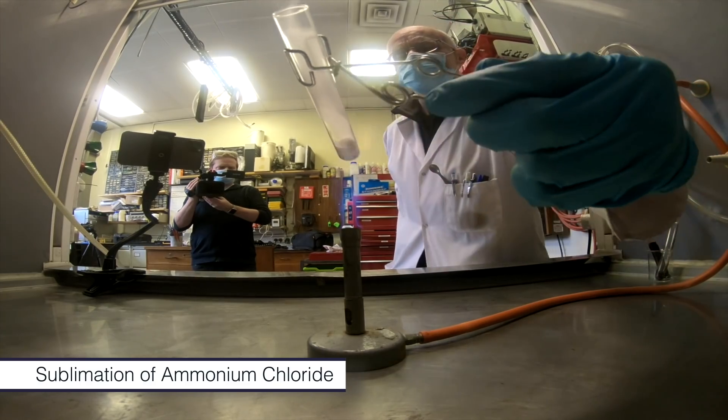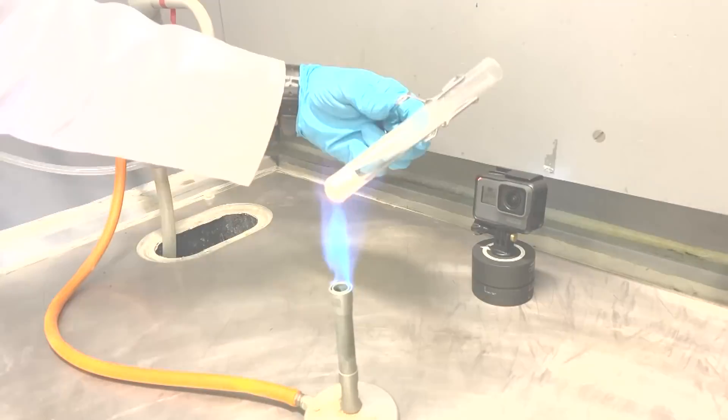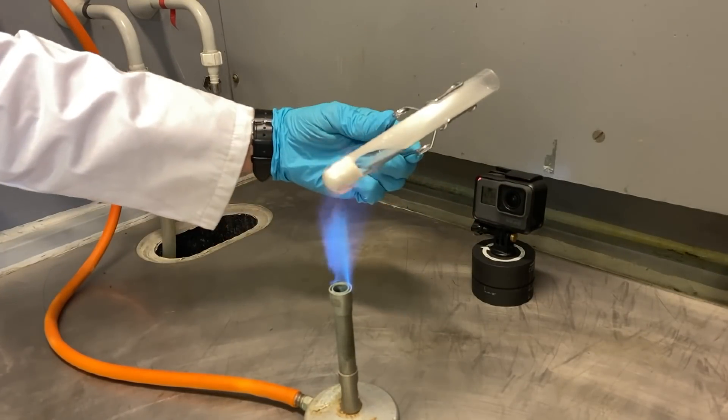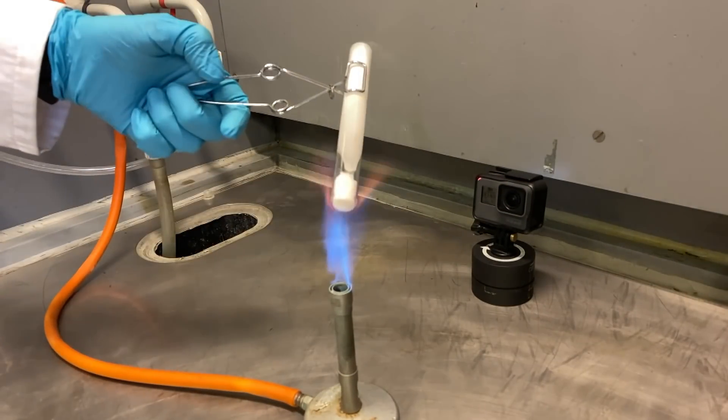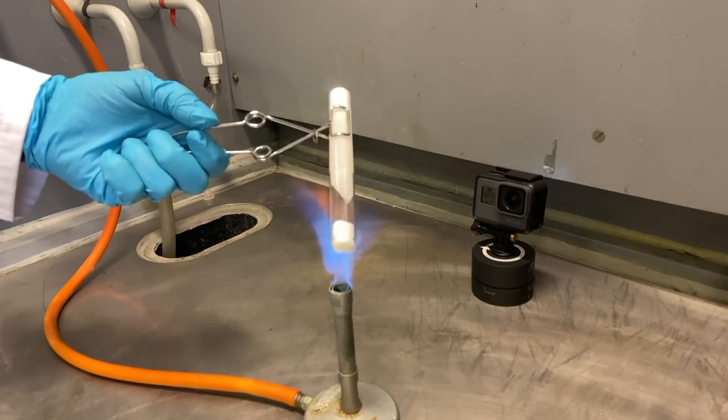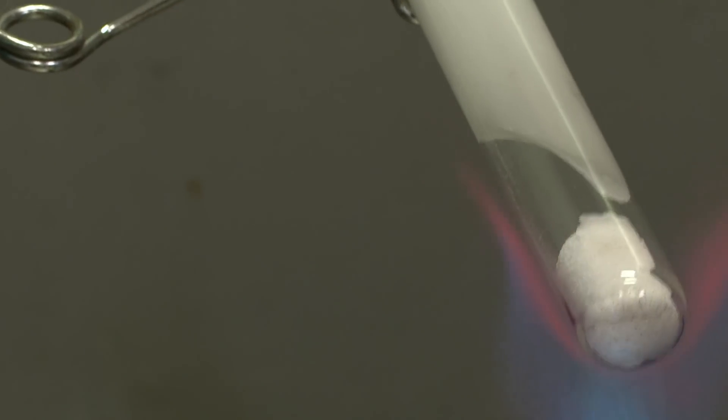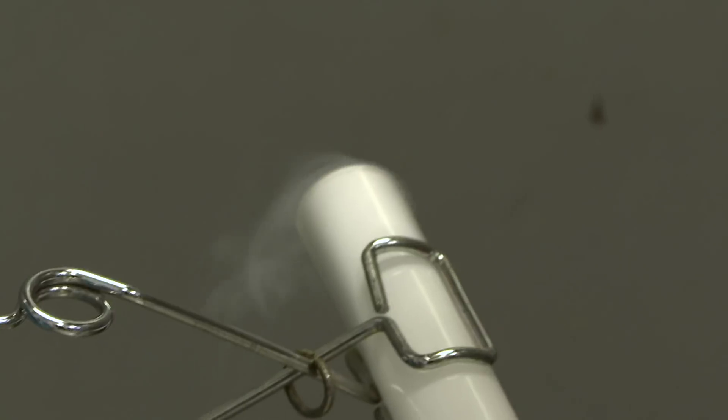So as you heat a test tube with ammonium chloride in it, you can see the white crystals just going up the side of the test tube from the hot part and condensing on the colder part.